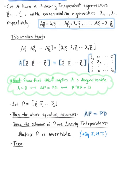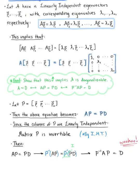Then taking the equation A times matrix P equals P times matrix D, and left-multiplying by the inverse of matrix P, we see that this equivalently becomes the inverse of P times A times P equals matrix D, which means that matrix A is similar to matrix D. So we can officially conclude that, since matrix A is similar to matrix D, matrix A is diagonalizable, which completes the proof of case 2.